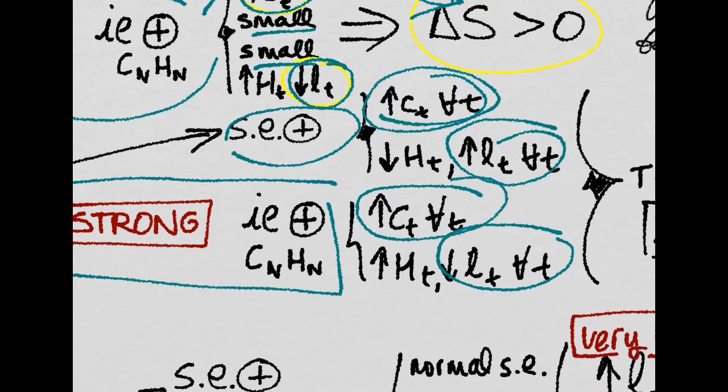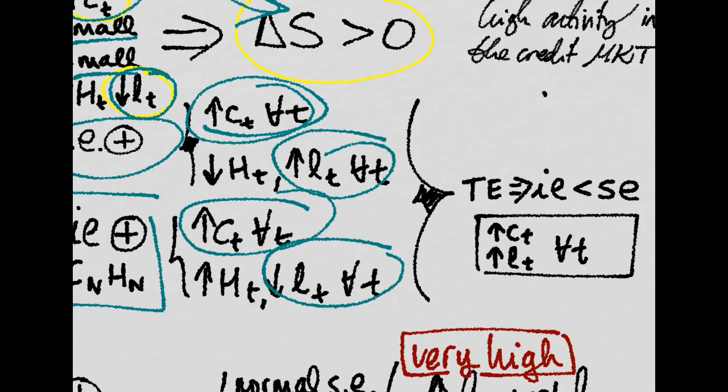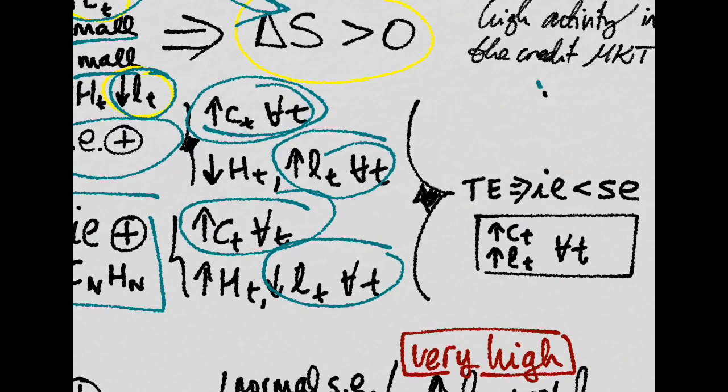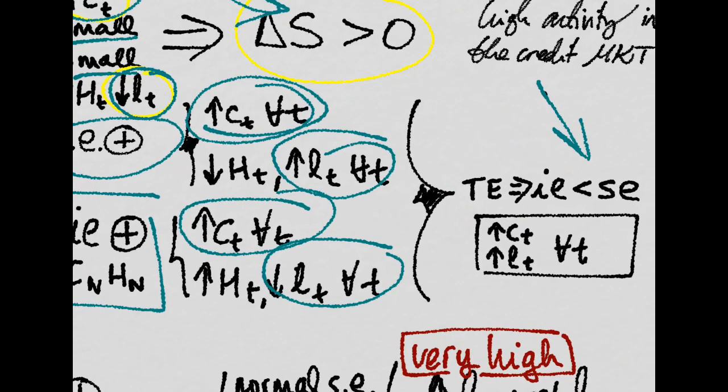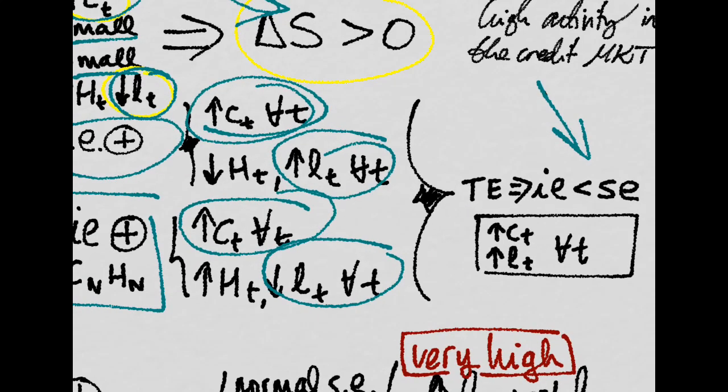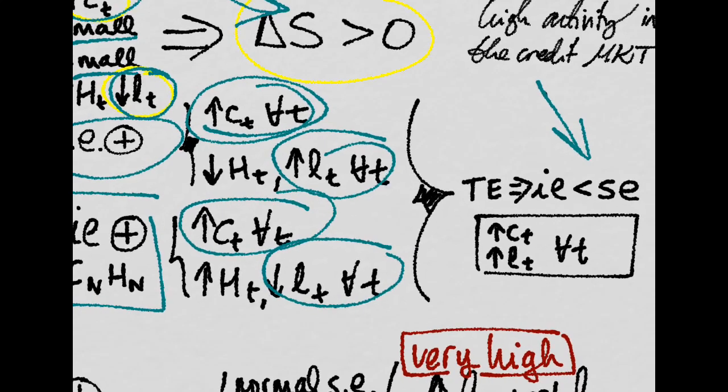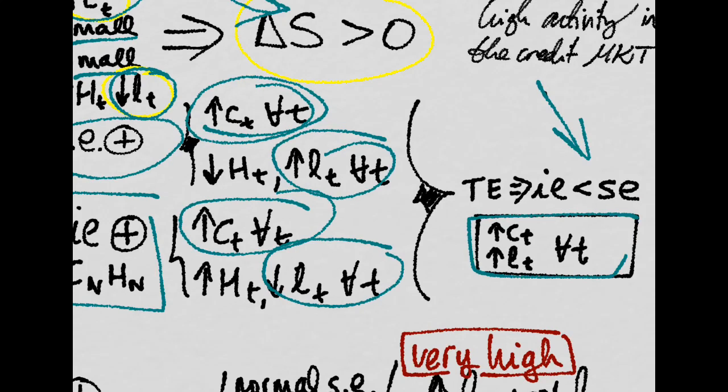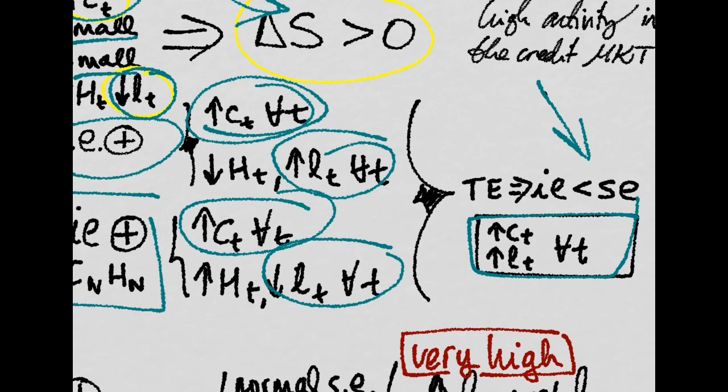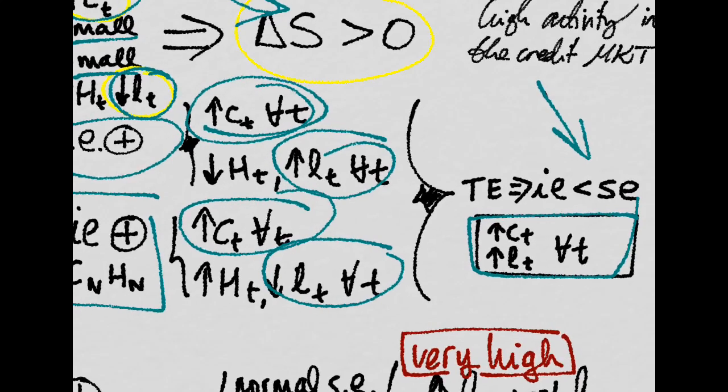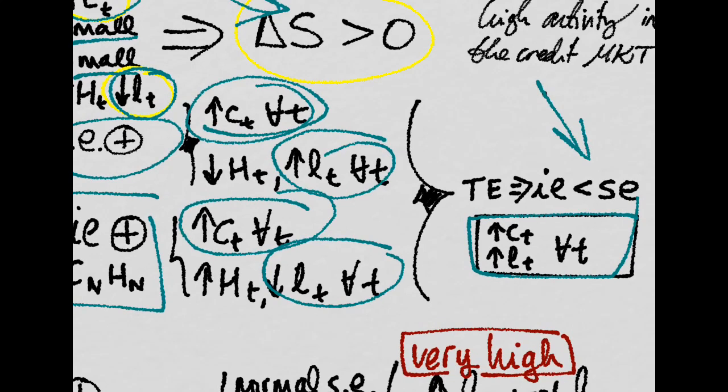Because you're permanently more productive, in the total effect, assuming that the substitution effect is stronger and that it's empirically correct, then you will have an increase in consumption and an increase in labor for every period of time.